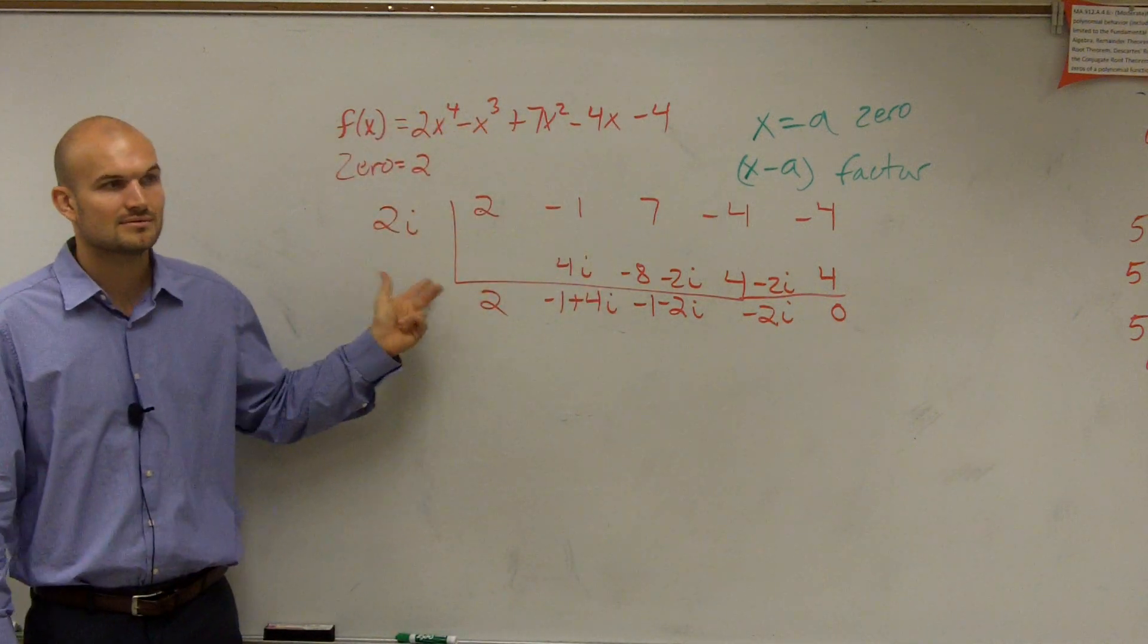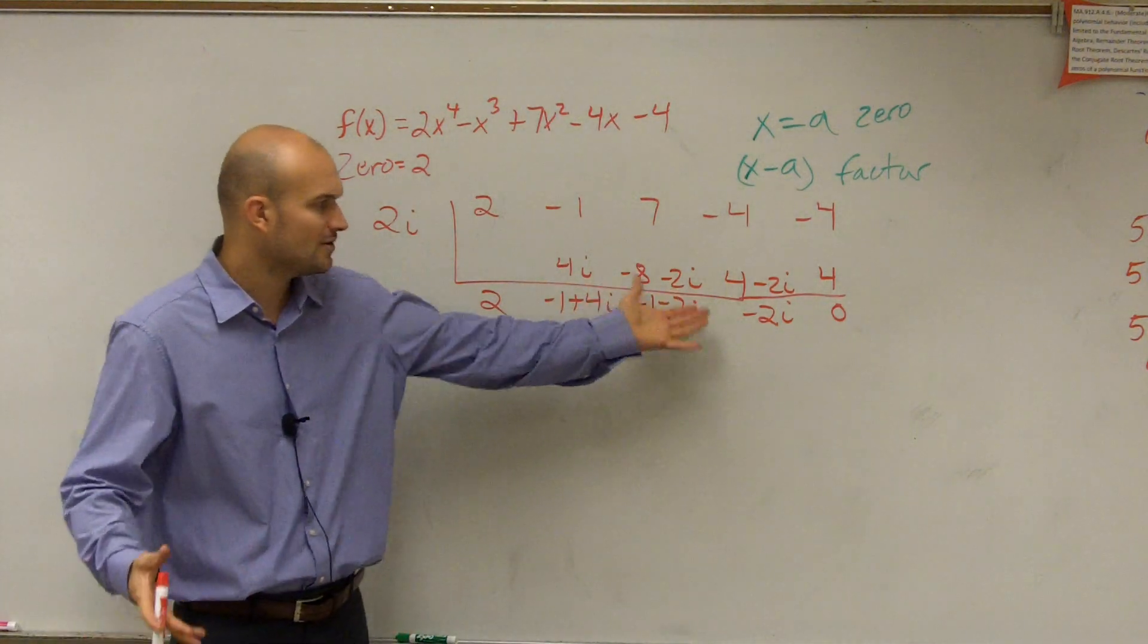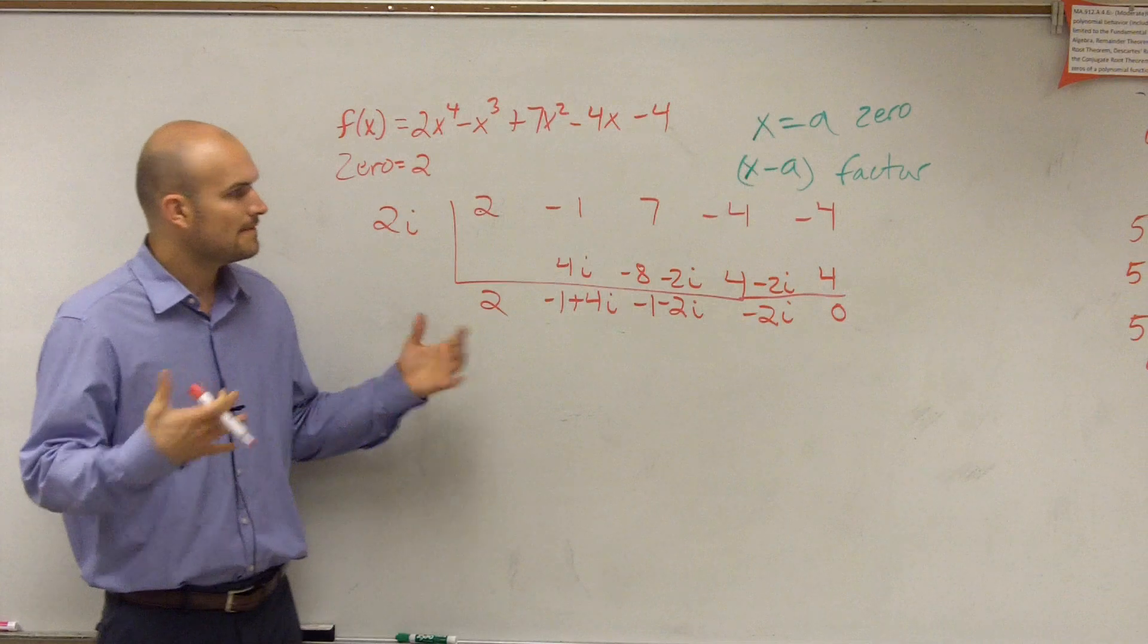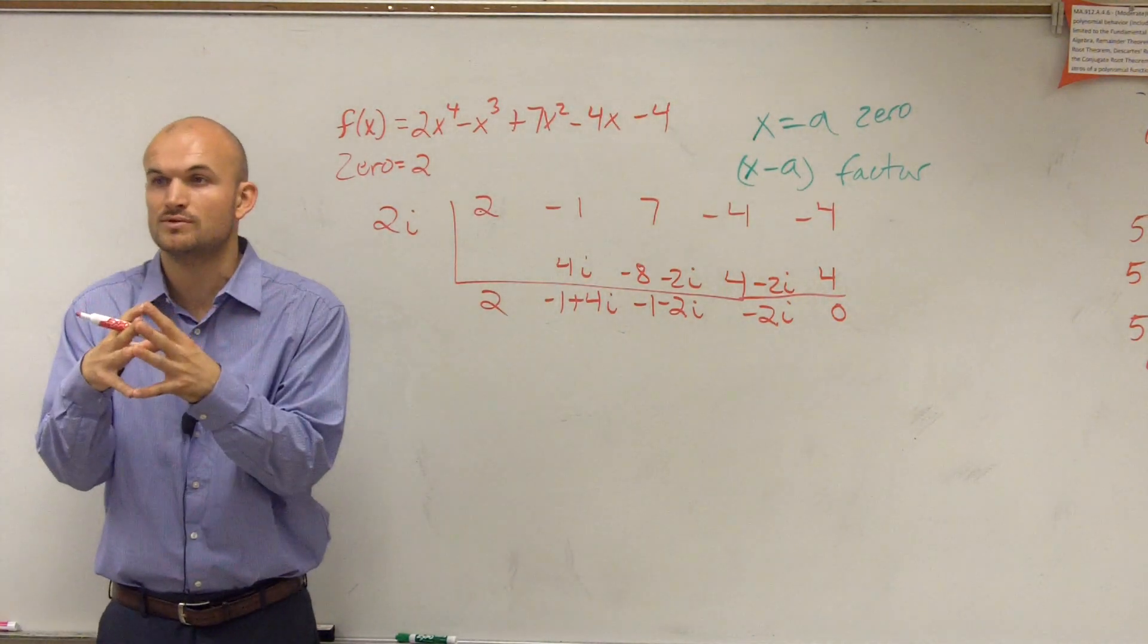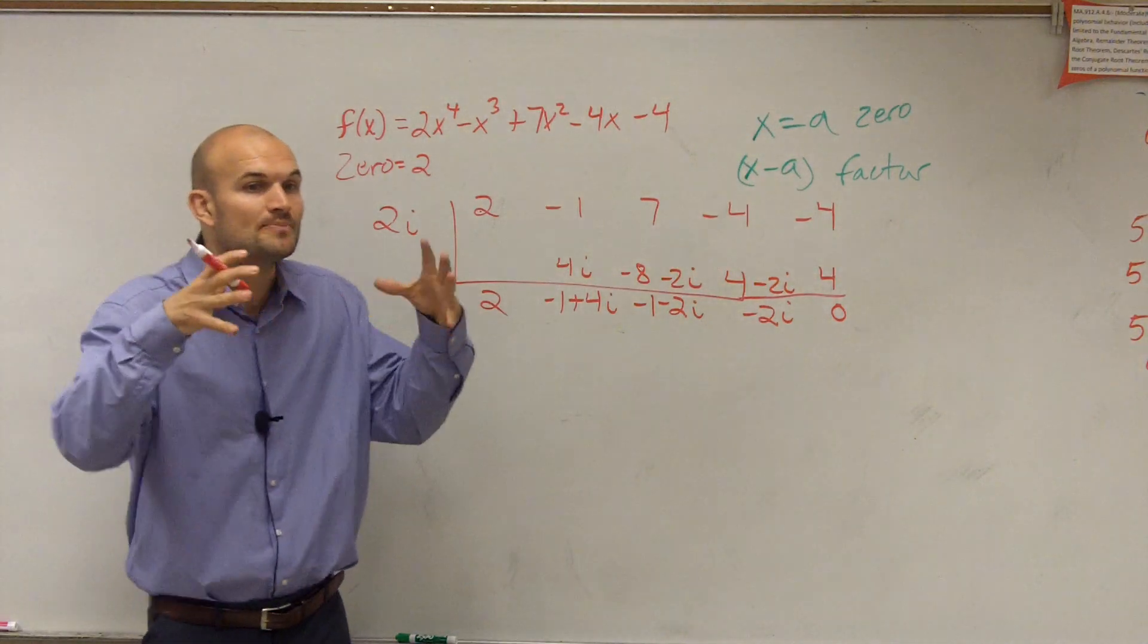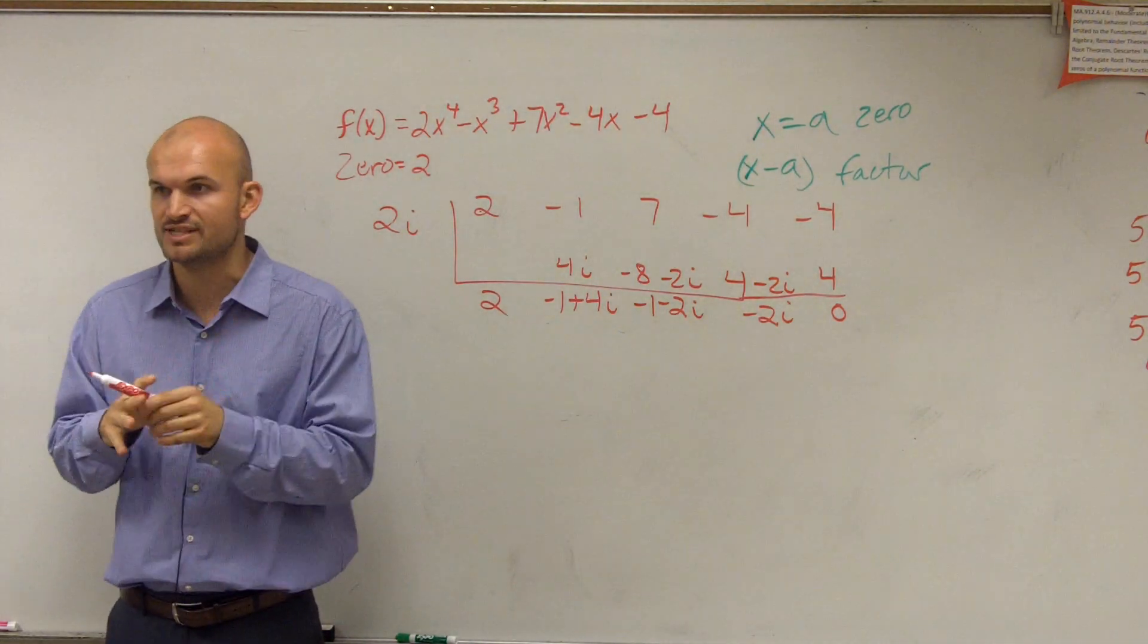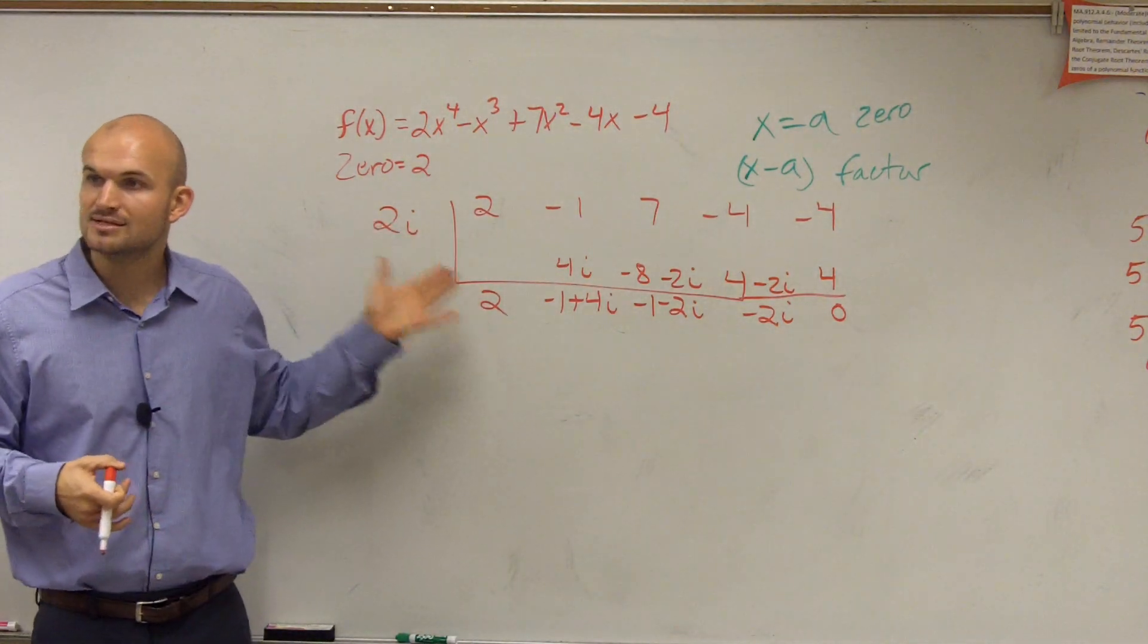So is this a zero? Yes. Right? It divides into it. I know it's a little bit difficult, but all we're doing is now just adding and multiplying your complex numbers. Now, here's where it gets difficult. Guys, remember when we talked about square roots, right? The square root of 3. If I told you the square root of 3 was a zero, then what else did you already know was a zero? Negative square root of 3.